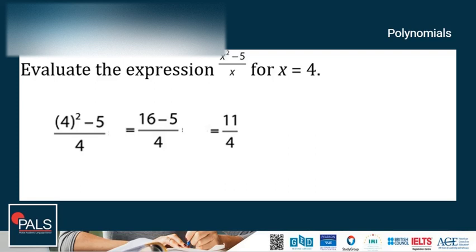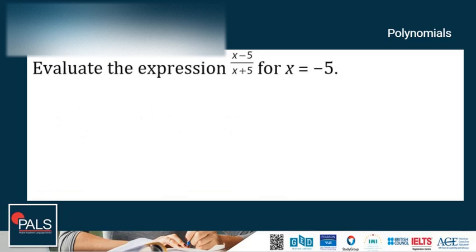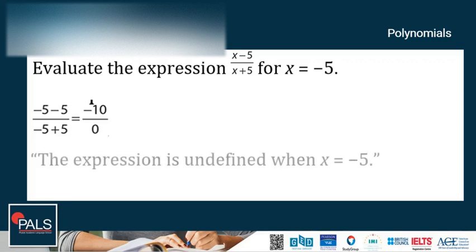Let's try another example of evaluating expressions. Evaluate the expression (x - 5) / (x + 5) for x = -5. Replacing each x with negative 5 yields the numerical expression (-5 - 5) / (-5 + 5), which equals -10/0, which makes the answer undefined. So the final answer here would be the expression is undefined when x = -5. The reason is because it has a denominator of 0.